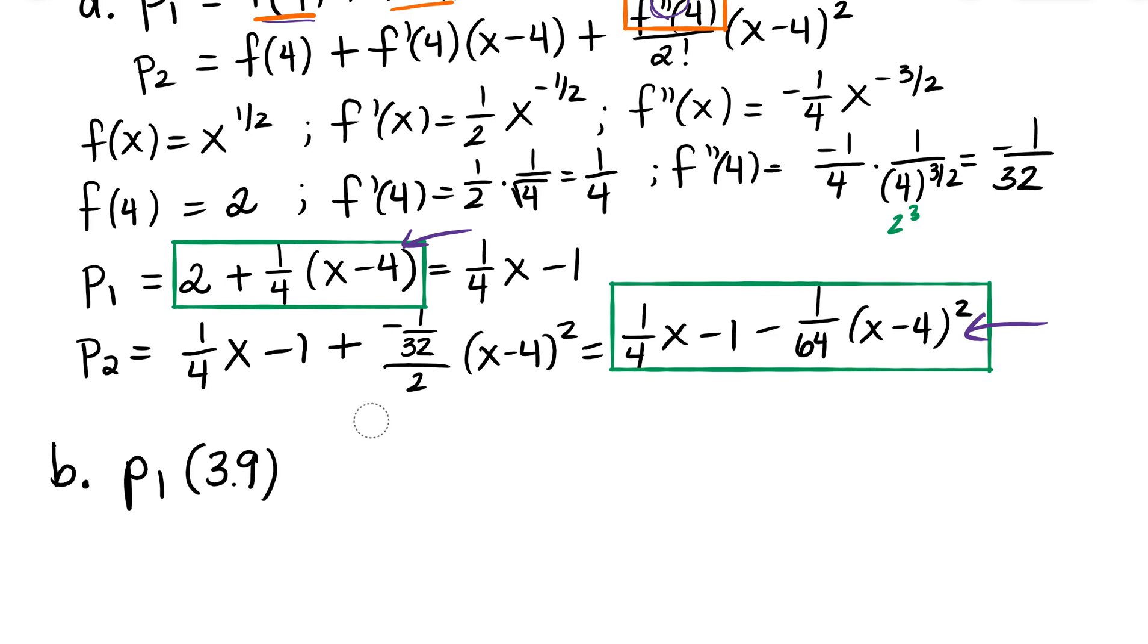But I'm going to take P sub 1 of 3.9, because I know I'm going to be close to 4. So if I plug that in, I'm going to take 1 fourth of 3.9 and then subtract 1. So I just put that into what I got here, 3.9 minus 1, and I get negative 0.025.